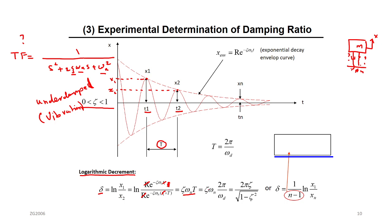How much is the period? It's 2π over the frequency of oscillation, which is omega_d. And omega_d equals ωₙ·√(1 − ζ²). You already have omega_n here, so omega_n cancels with omega_n and you are left with 2πζ / √(1 − ζ²). So the only variable here is zeta — this is what we're looking for. From the log decrement, you can find zeta.